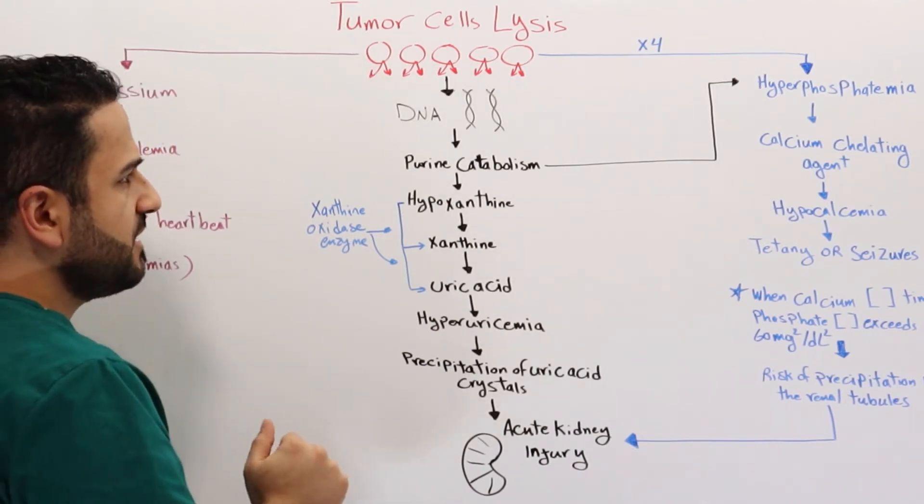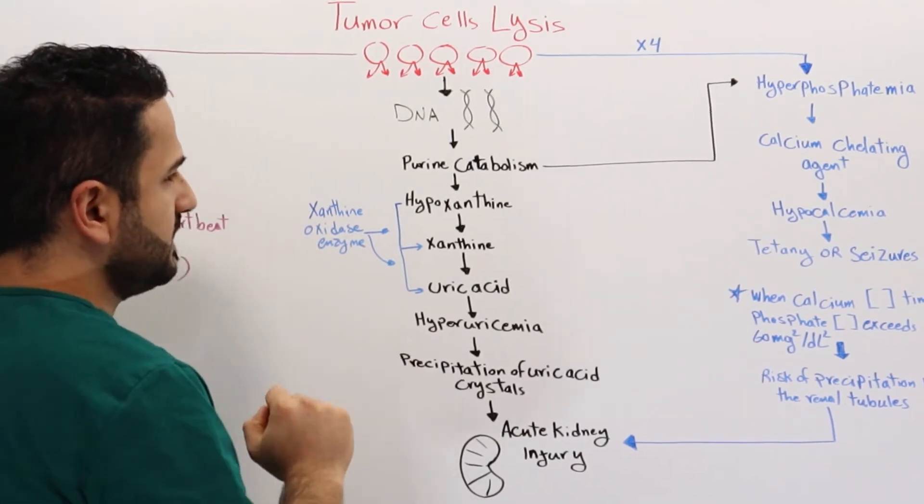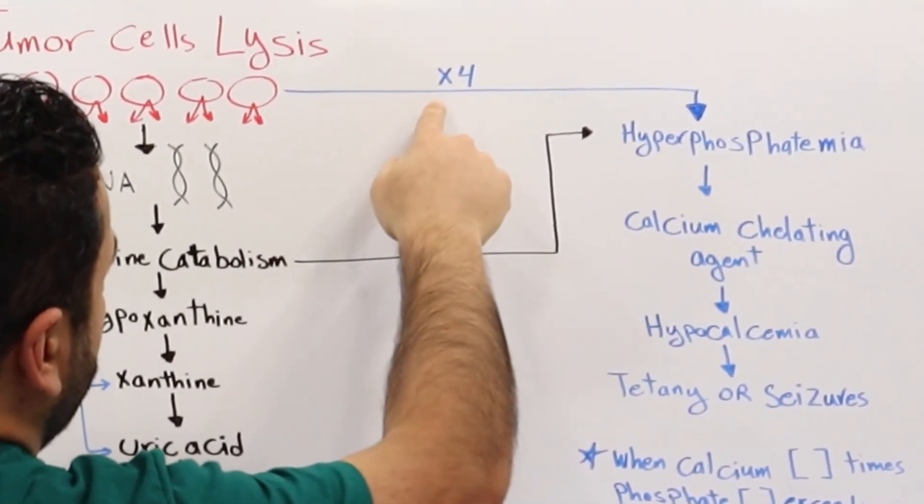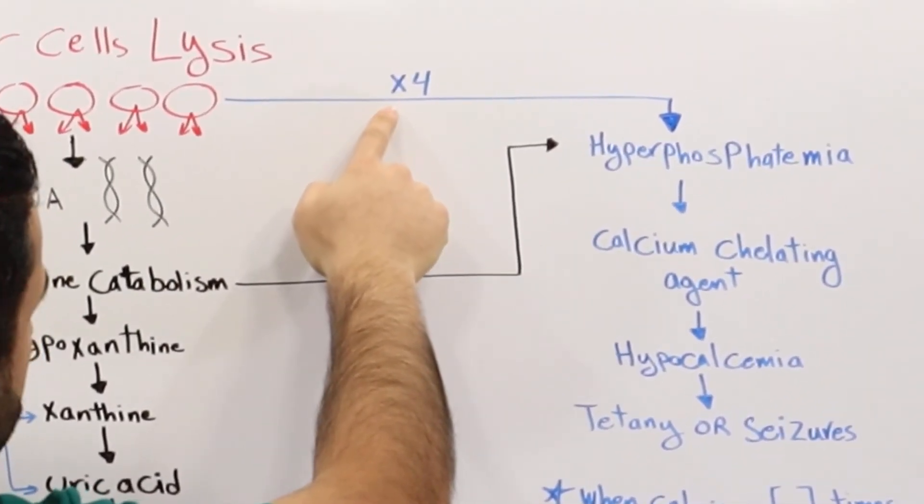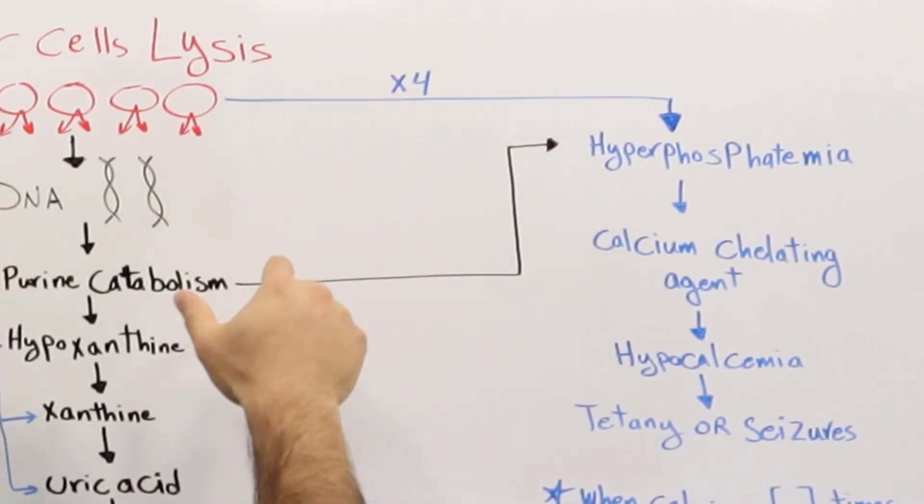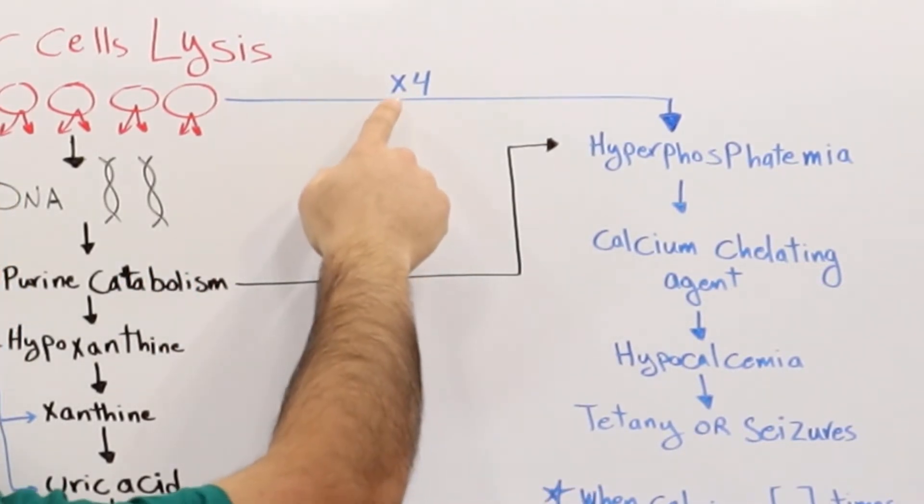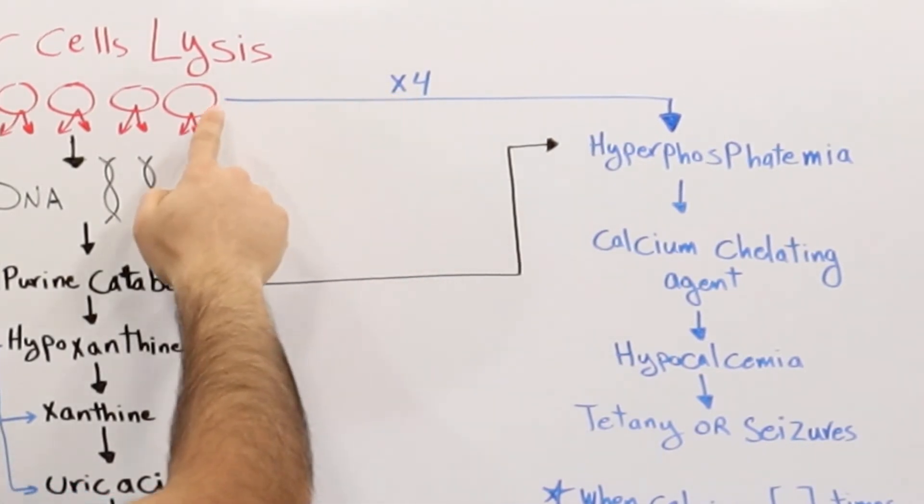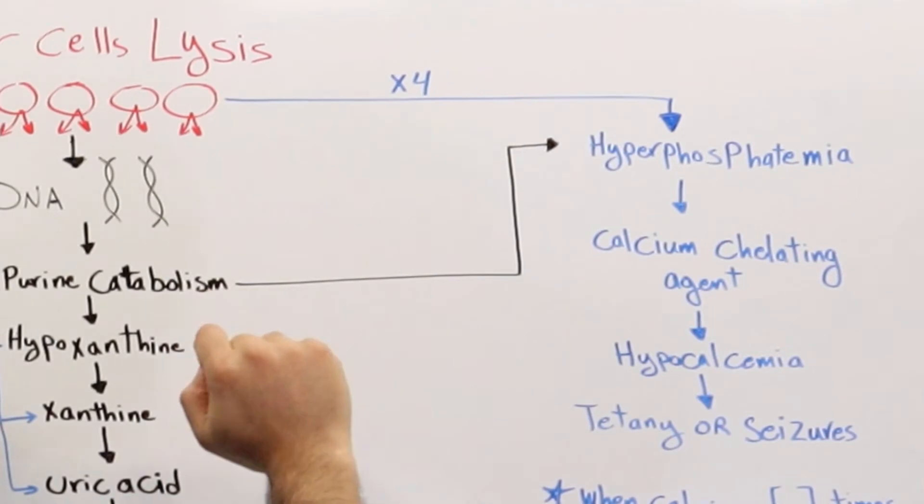Let's move into the other parts of the cell content. In general, phosphate is basically up to four times more than the content of normal cells. There is four times more content of phosphate in the cancer cells in comparison to normal cells.